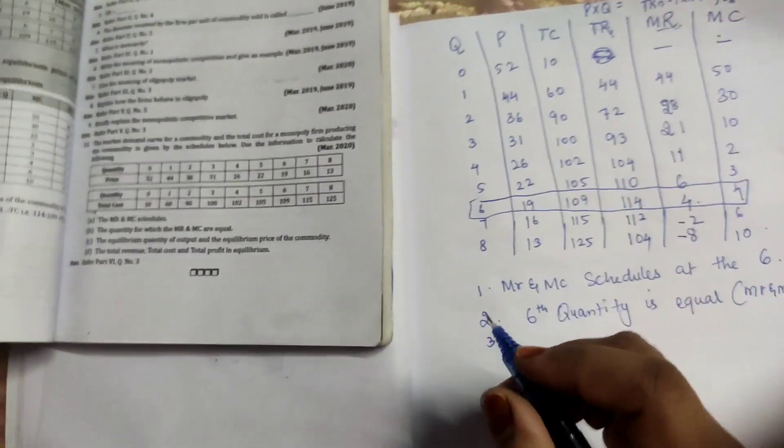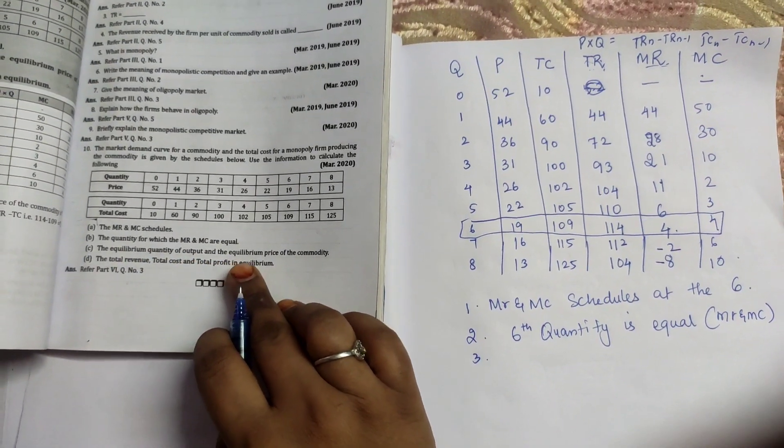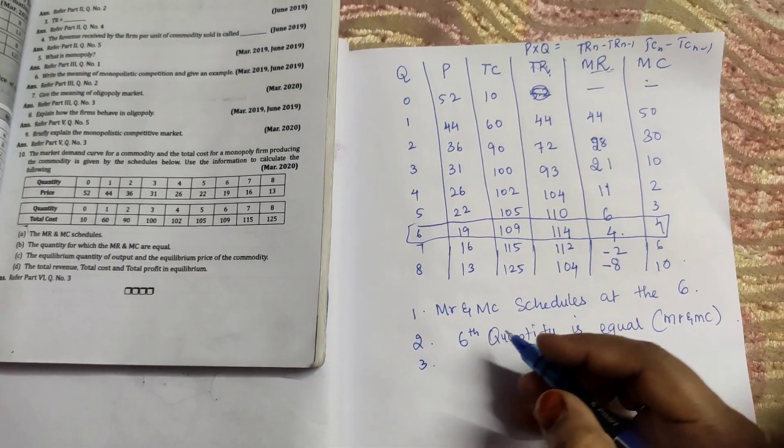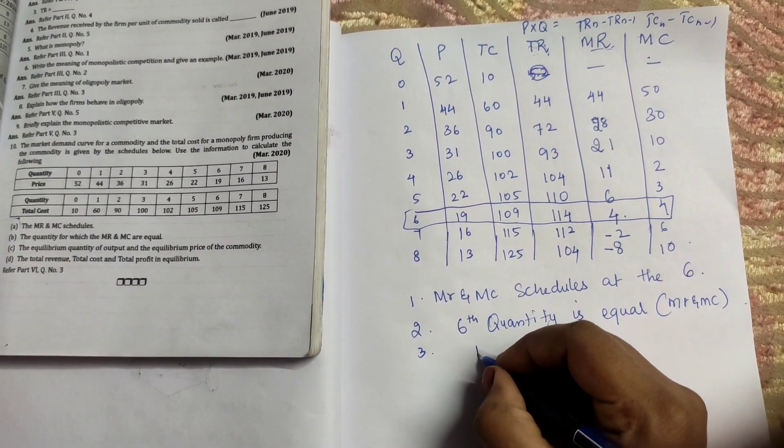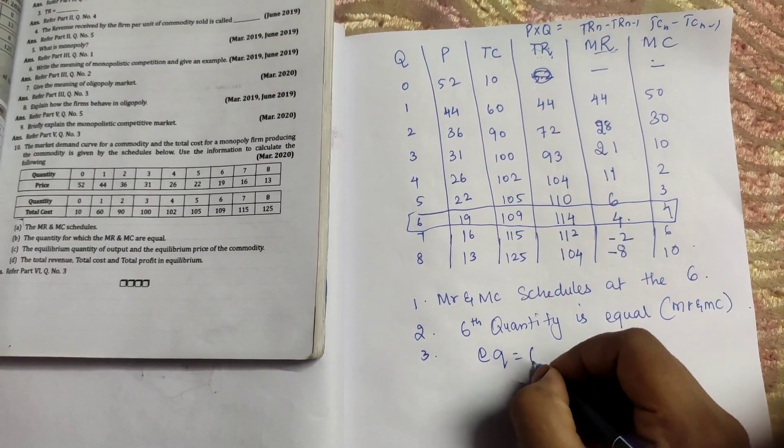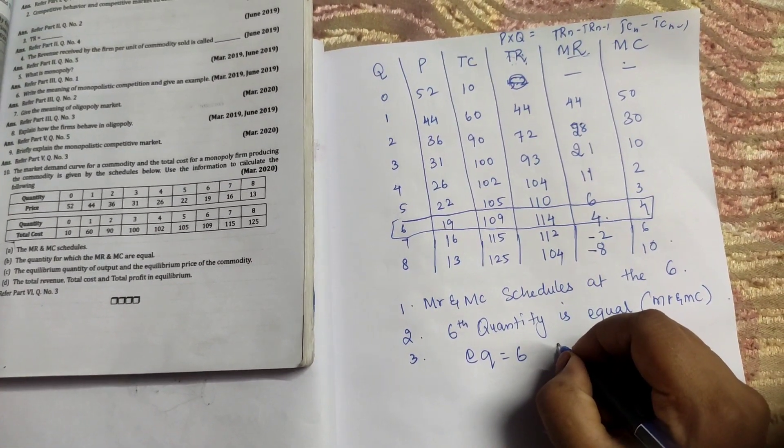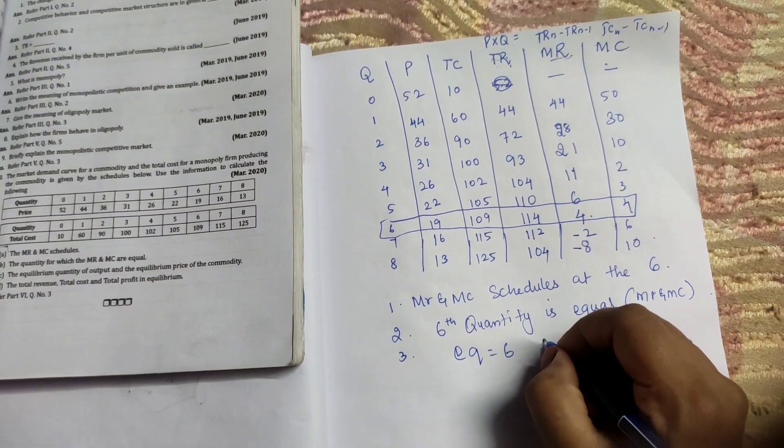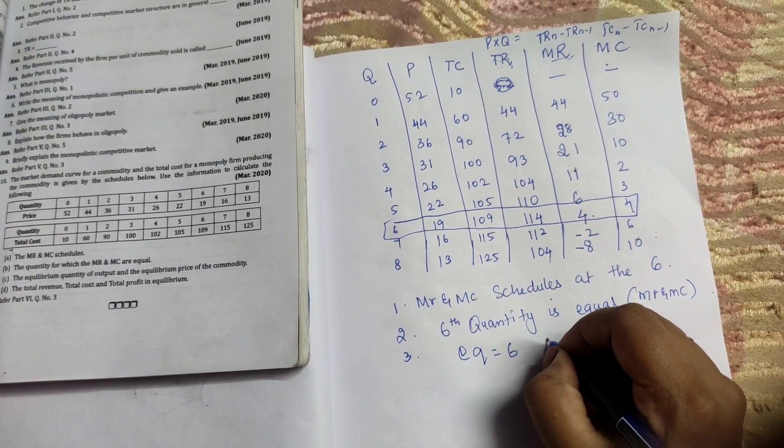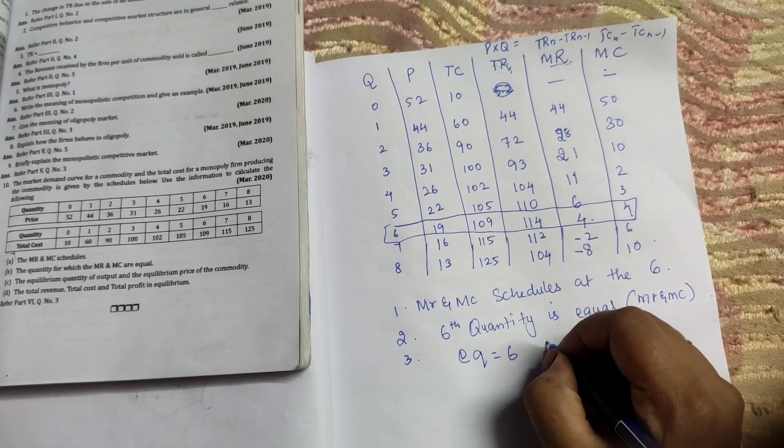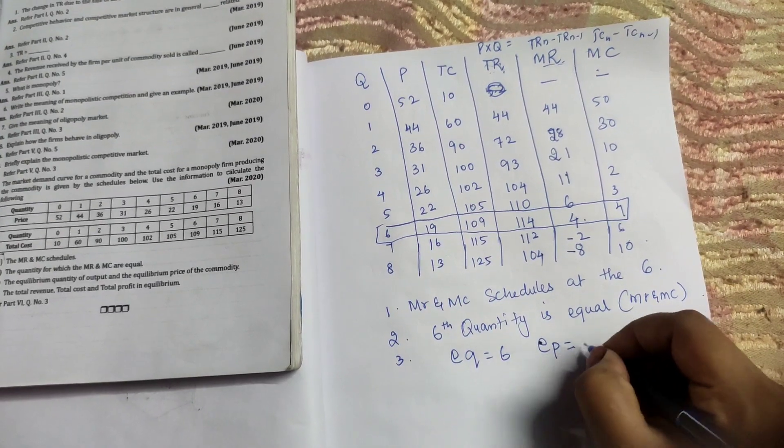Third question, what is it? The equilibrium quantity of output and equilibrium price of the commodity. So equilibrium quantity is 6 and equilibrium output is what is meant by output, which is total cost.